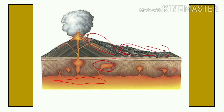Some magma cannot come out of the volcano and instead settles inside below the surface. This is what we call intrusive rocks. The magma cools slowly, completely surrounded by soil and rock beneath the earth's surface. The cooling and solidification of this magma results in the formation of rocks with large crystals, known as intrusive rocks.